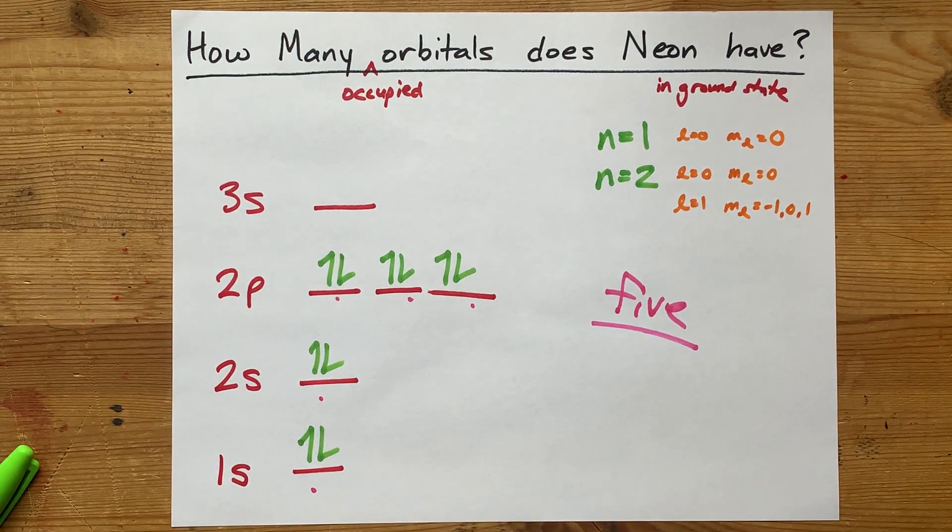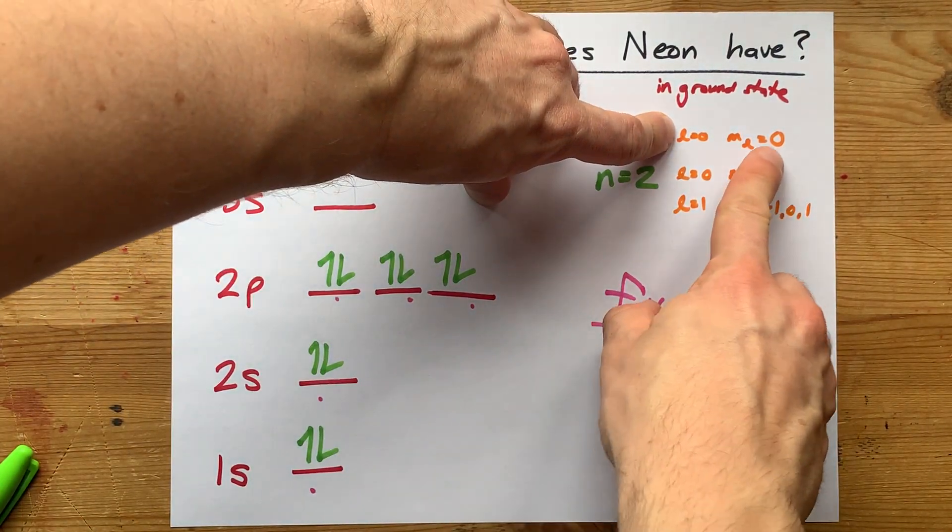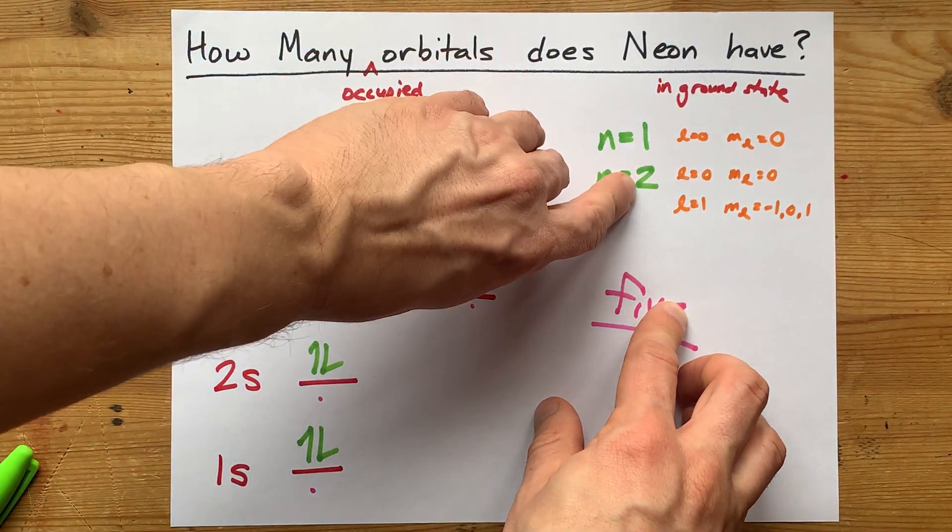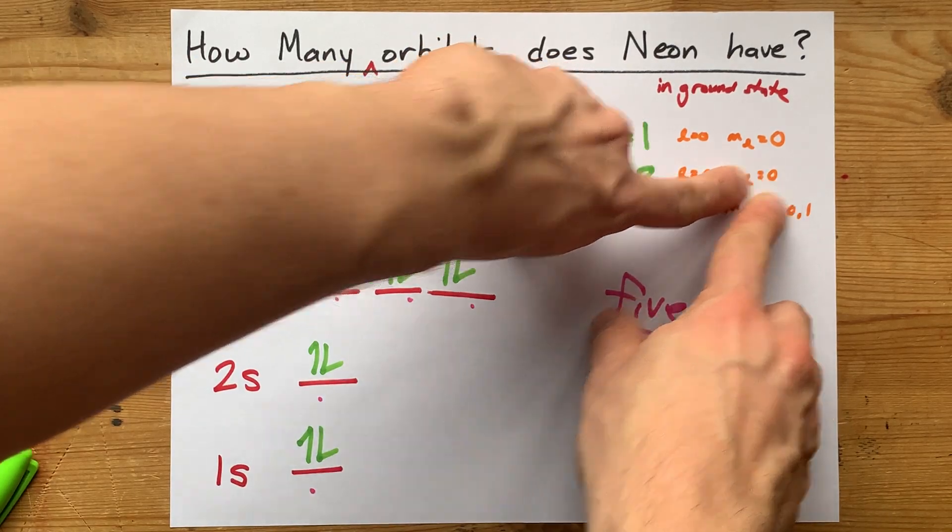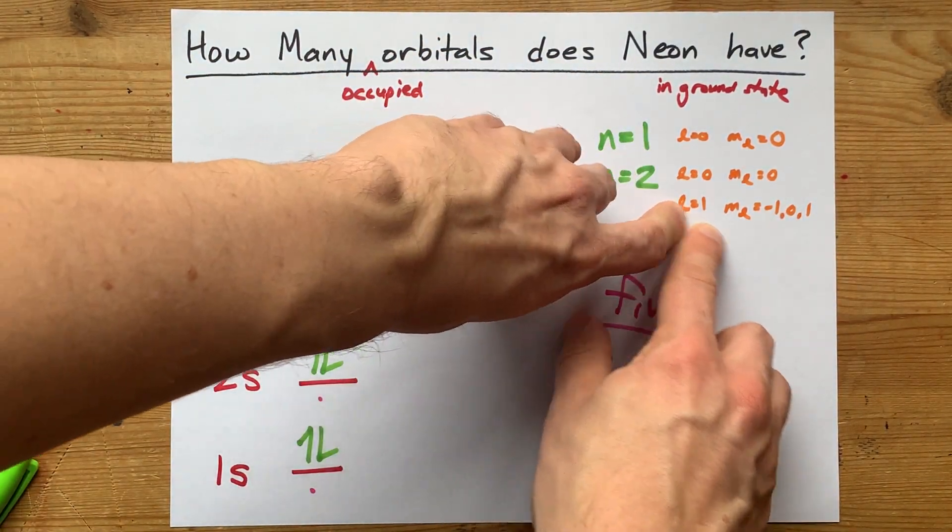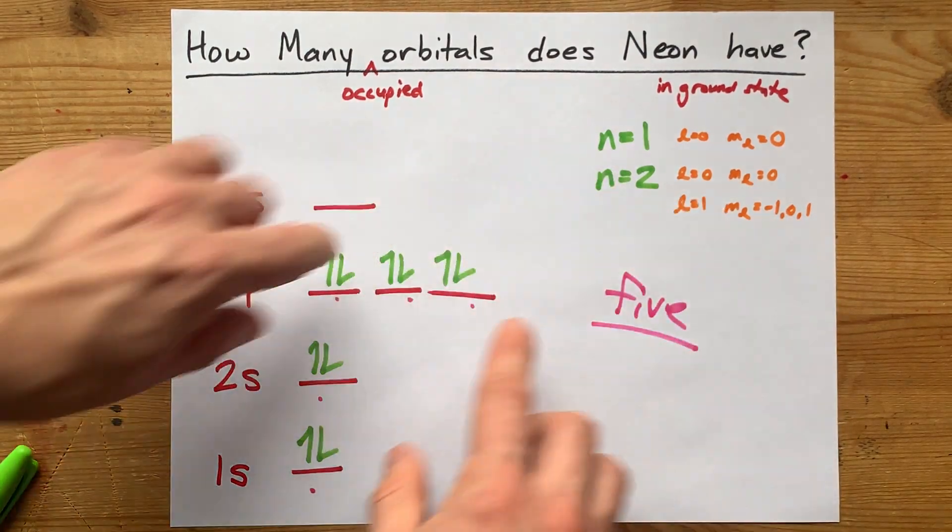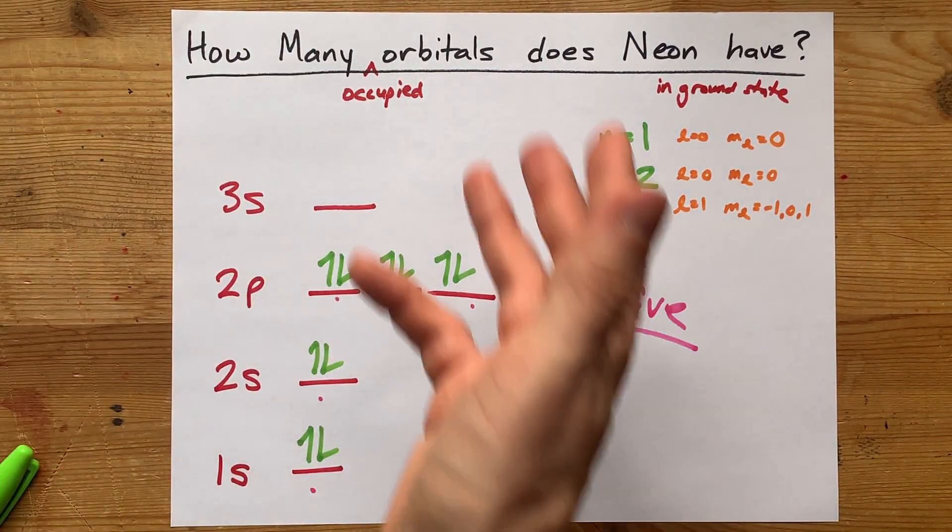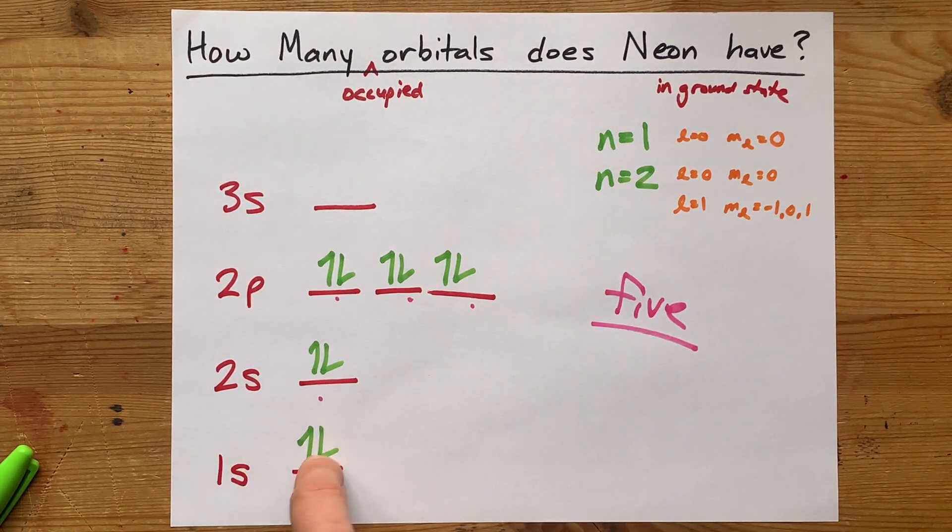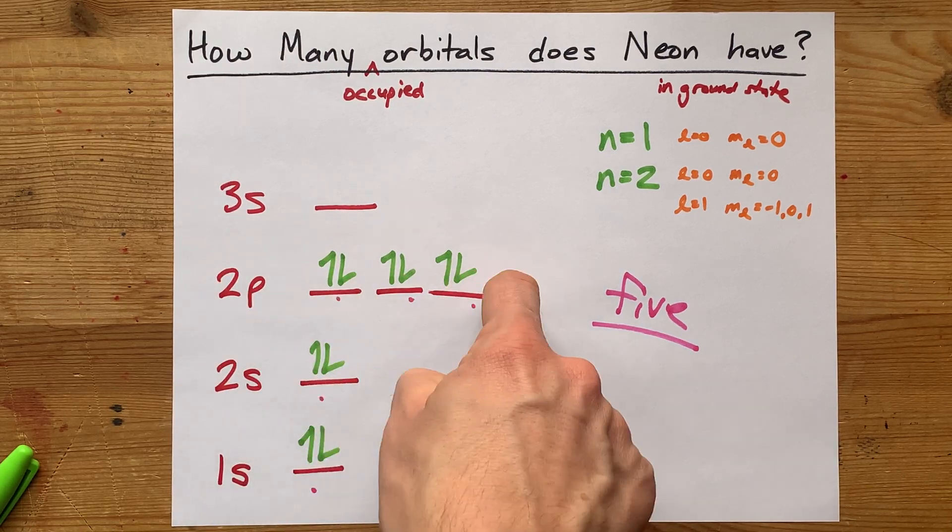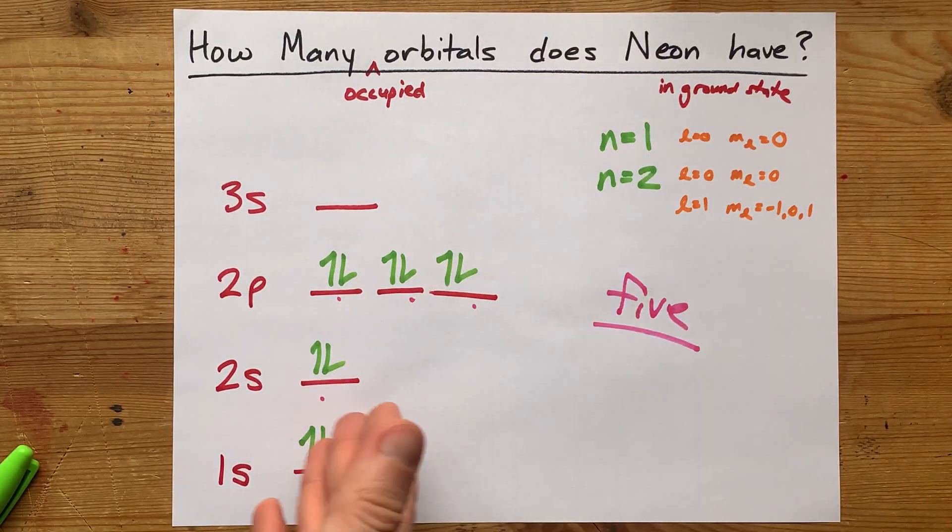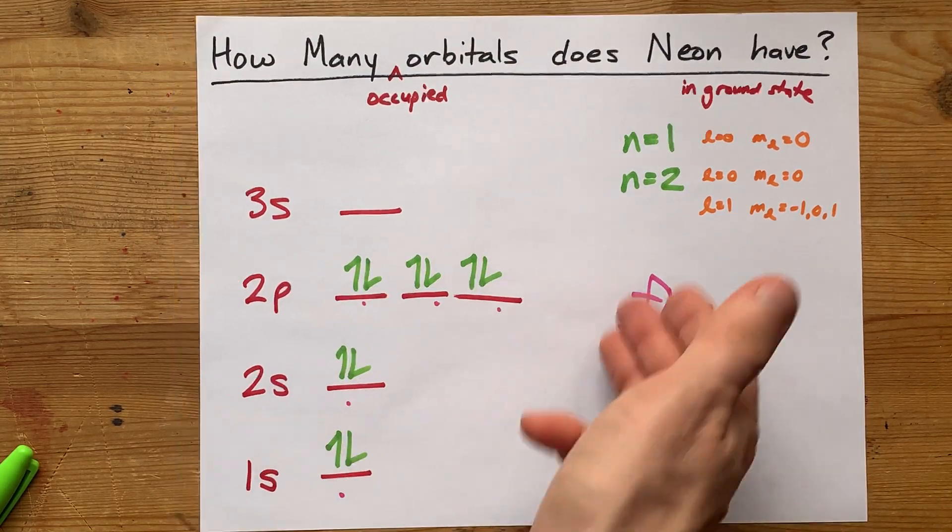This is why the s subshells only have one orbital. See? And the 2s only has one orbital. But the 2p has three orbitals. And the fact that we need 10 electrons total for neon is why we have 1s2, 2s2, 2p6. 2 plus 2 plus 6 is 10 for neon.